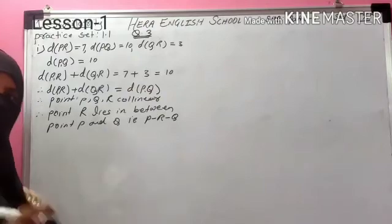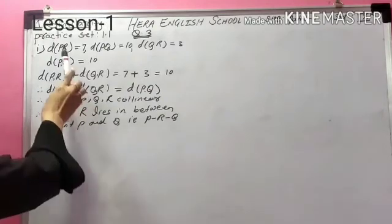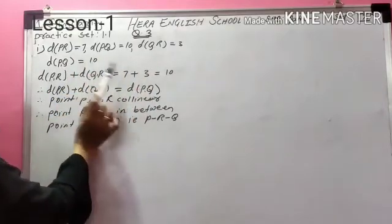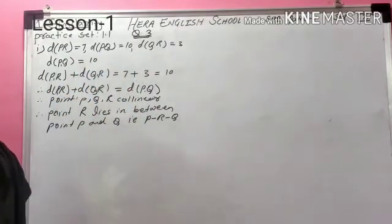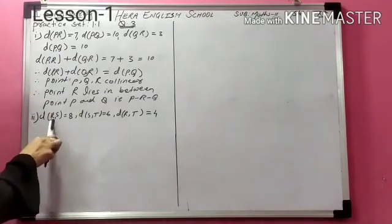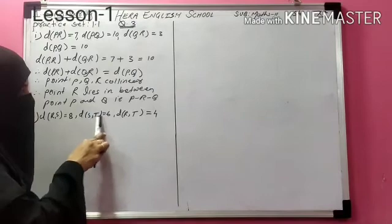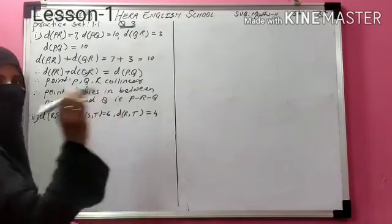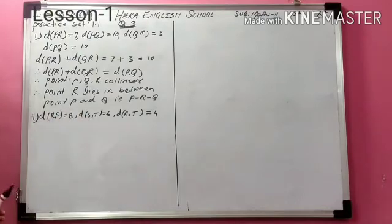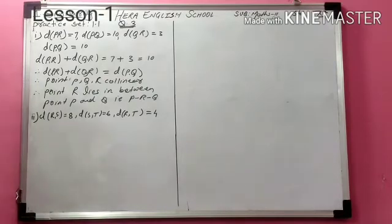Again, to summarize: first add the smaller distances. If their sum equals the greater distance — meaning the sum of two segments equals the greater segment — then the points are collinear. Second question: distance RS = 8, distance ST = 6, distance RT = 4. Here the three points are R, S, and T. The greater distance is RS = 8. Now add the smaller distances: distance ST + distance RT.